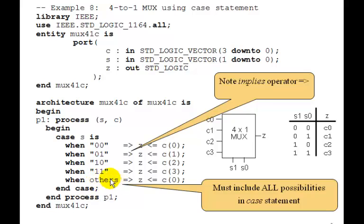And so when we say when others, we're taking into account all possibilities. And here we just assign it to C0. But these are the four that we really care about.